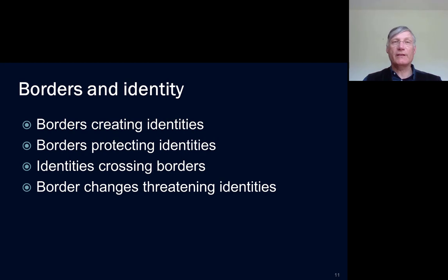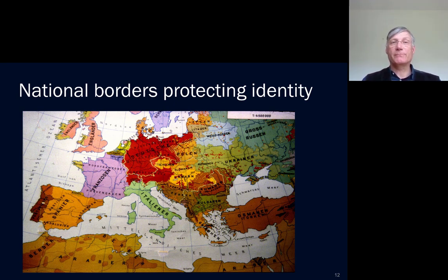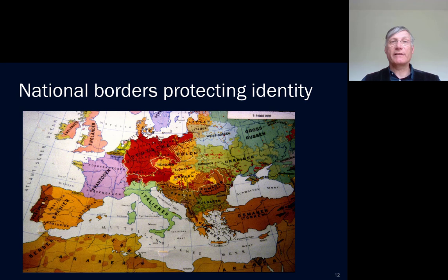But the process could also take place in the other direction. Borders can also be used to protect pre-existing identities. The example of Germany is an obvious example. The state was only formed in the late 19th century, although the idea of a German nation was established long before that. And of course the borders of groups with shared basic characteristics of national identity — language borders and political borders — did not really coincide.